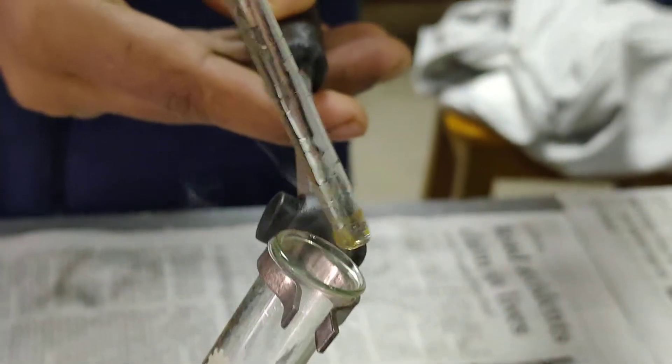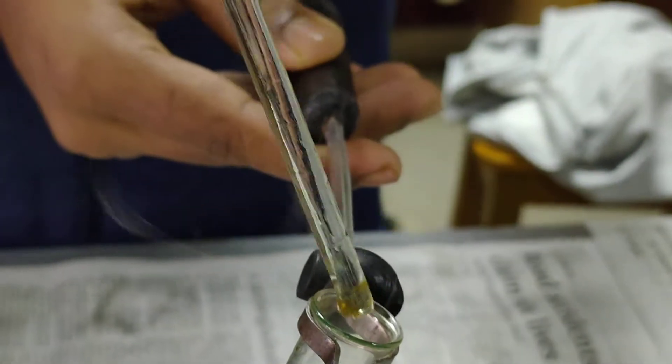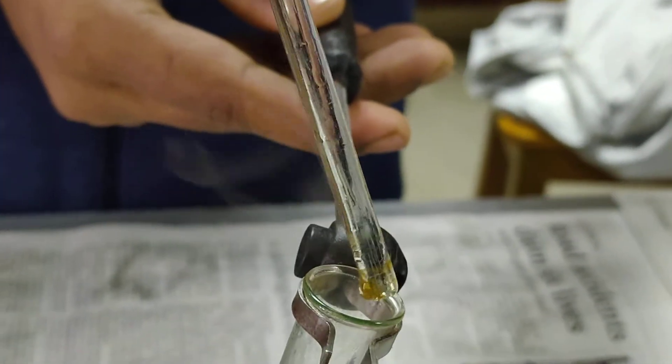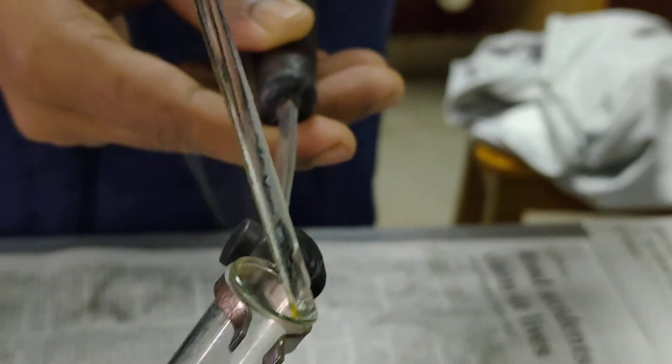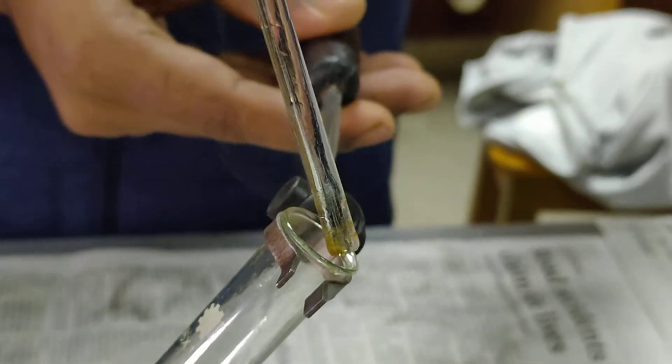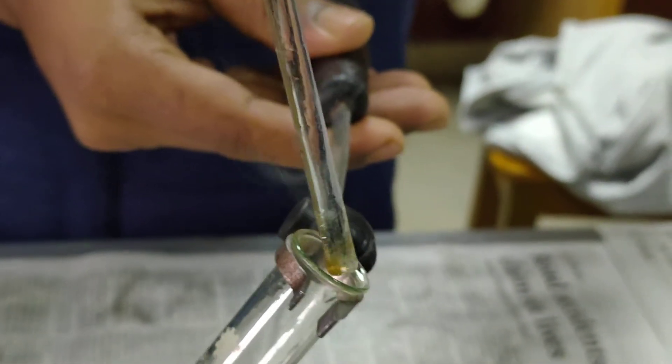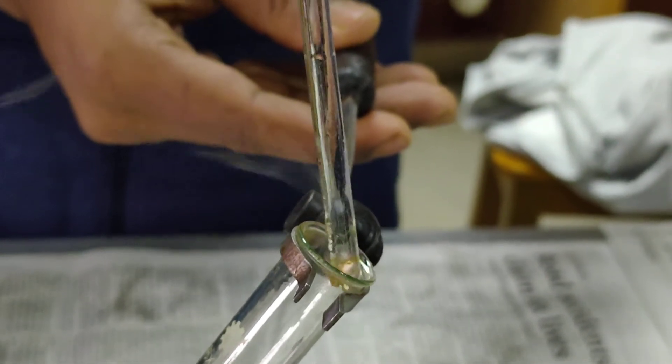Whenever a hydrochloric acid dipped glass rod is placed at the mouth of the test tube, it is producing white fumes. This white fume indicates the presence of ammonium. This is the white fume of ammonium chloride.